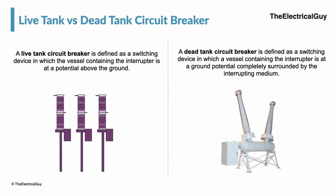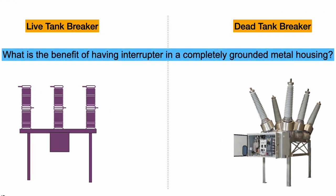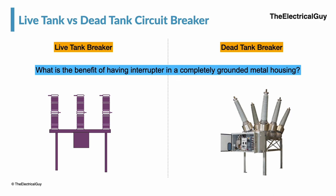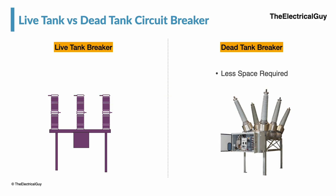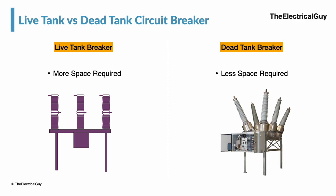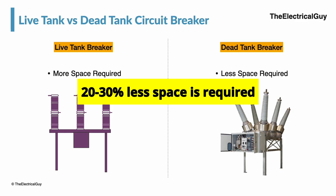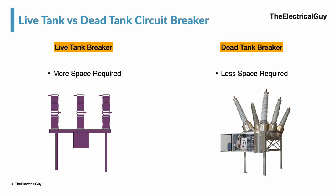We have seen one of the major differences between live tank and dead tank circuit breakers. Having the interrupter at dead or ground potential offers certain advantages. Since the complete part containing the interrupter is insulated by a dielectric medium like SF6 gas, the space required for a dead tank circuit breaker is less compared to the live tank design — approximately 20–30% less space, as you can see comparing the 145 kV dead tank and 145 kV live tank circuit breakers shown on screen.